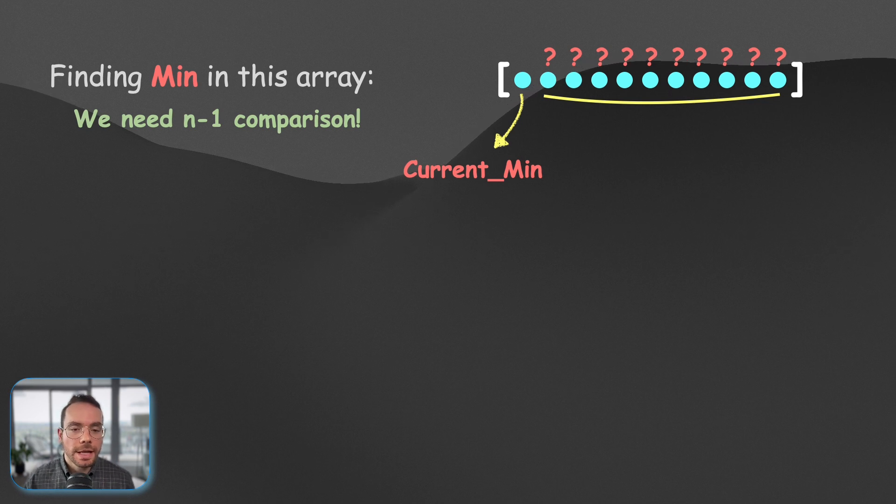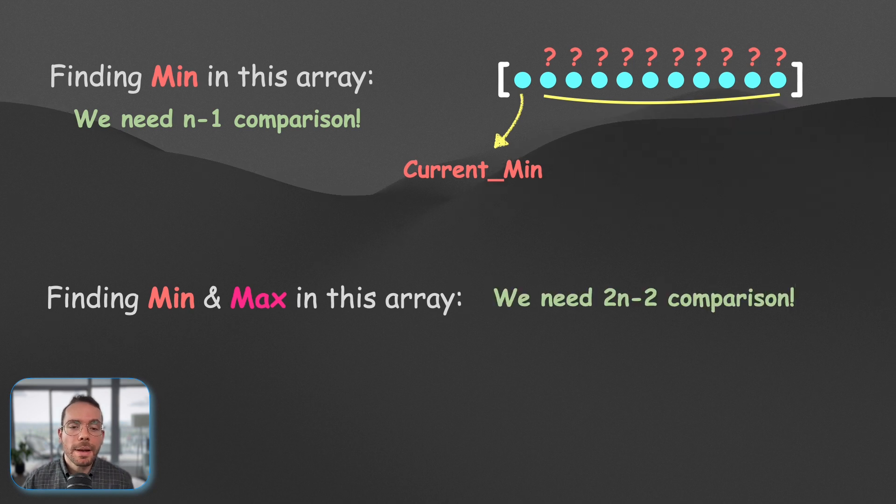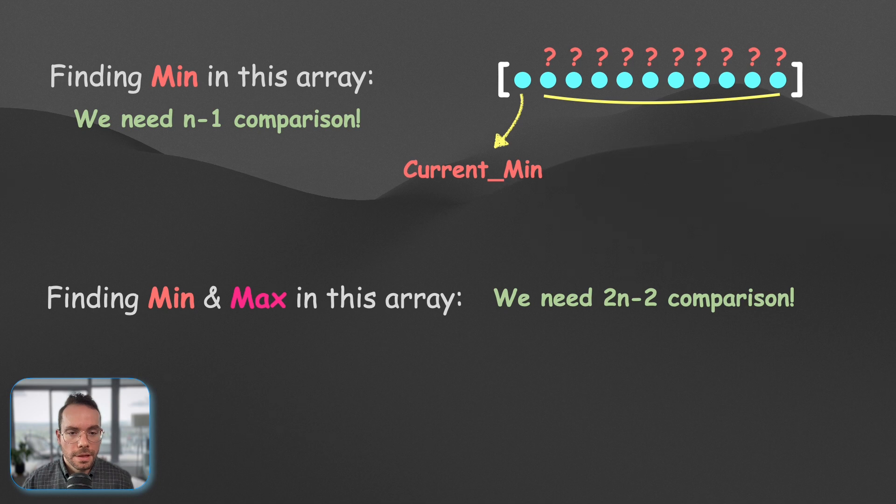So, whenever we found a better min, we will replace that with the current min, and we go on. So, in this approach, we will need n minus one comparisons. Now, if we want to do the same to find the max with the same approach, we will need twice as many comparisons. But are all those comparisons necessary? Can we do better?